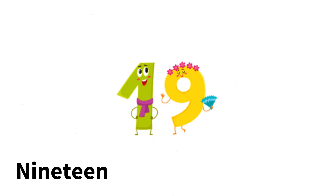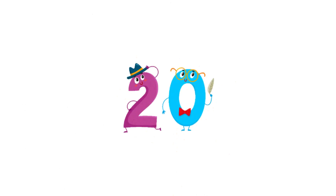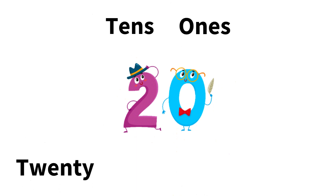After eighteen comes one-nine, nineteen. Now, what do you think will come next? Remember, nine is the highest single digit number. Now that we have reached nine in the ones place, we have to start back at zero. When we start the cycle over at zero, the number in the tens place — which is 1 — will now change to 2. So after nineteen comes two groups of ten, which is now called twenty. One-zero is ten, and two-zero is twenty — two groups of ten.